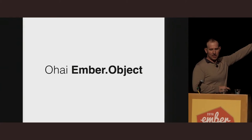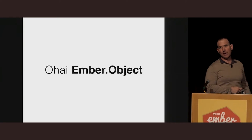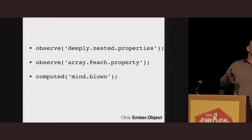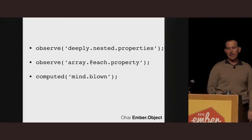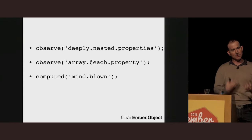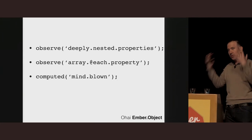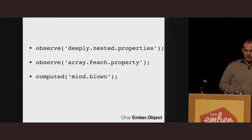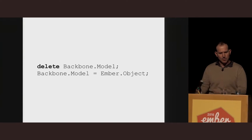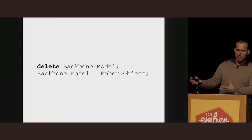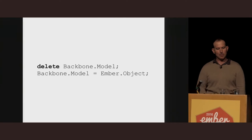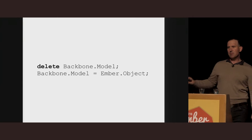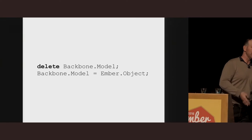This single class had everything that I was missing in Backbone and then some. It had nested key-value observations, so I didn't have to manually construct these huge chains of observers. It had array observations, so I finally got those reactive lists that I was after. It had these things called computed properties that blew my mind with their power. It won me over almost immediately, and we ended up using EmberObject pretty much as a drop-in replacement for Backbone model. With the turbocharged observers and computed properties, Ember was actually better at doing Backbone than Backbone was.